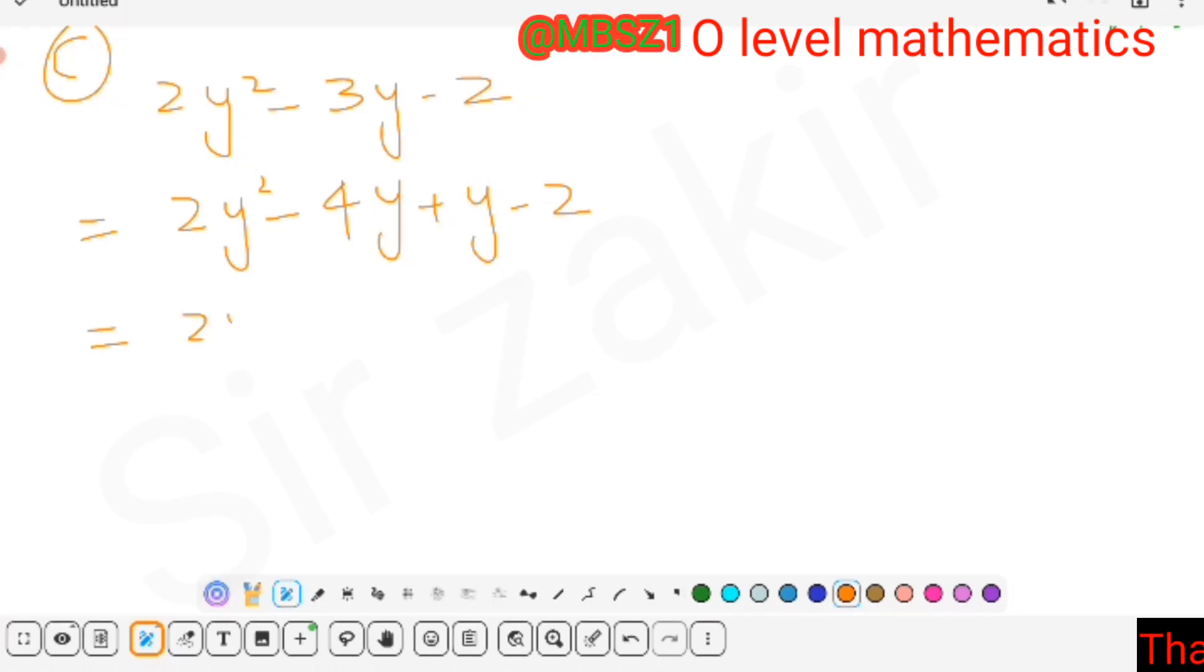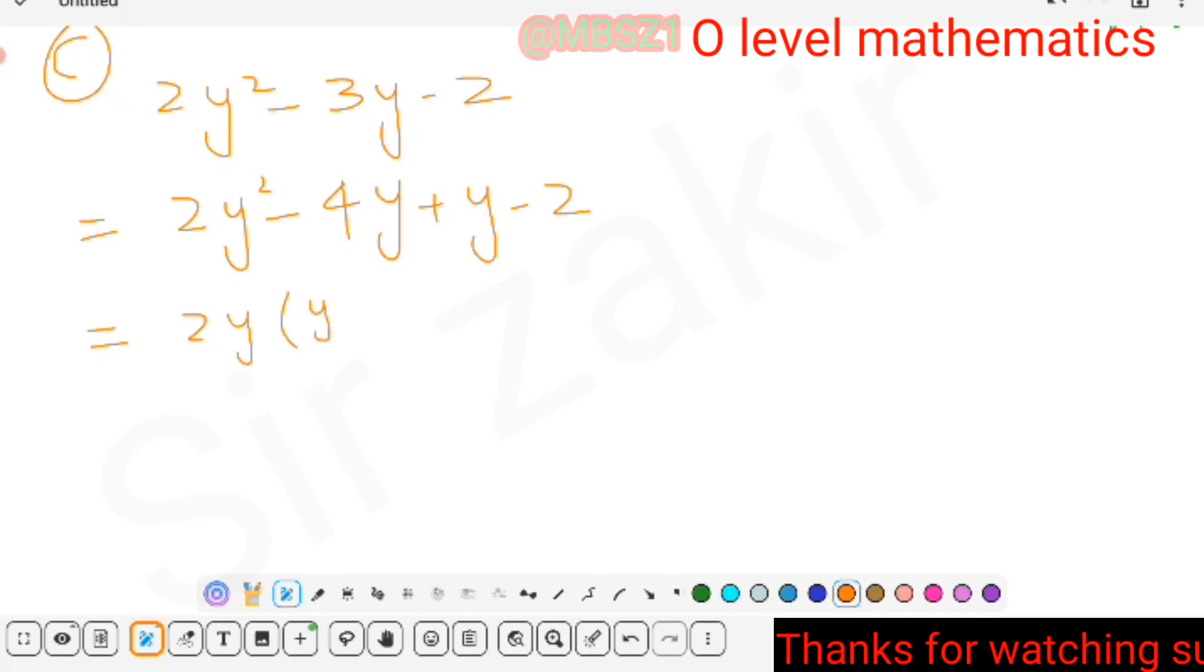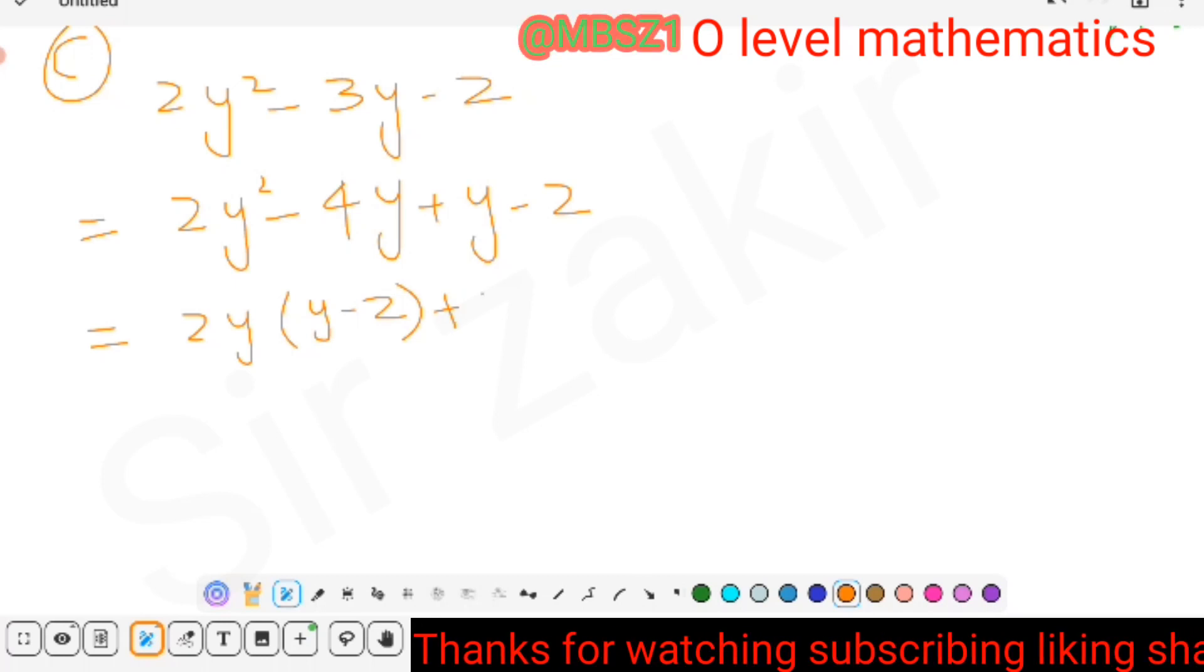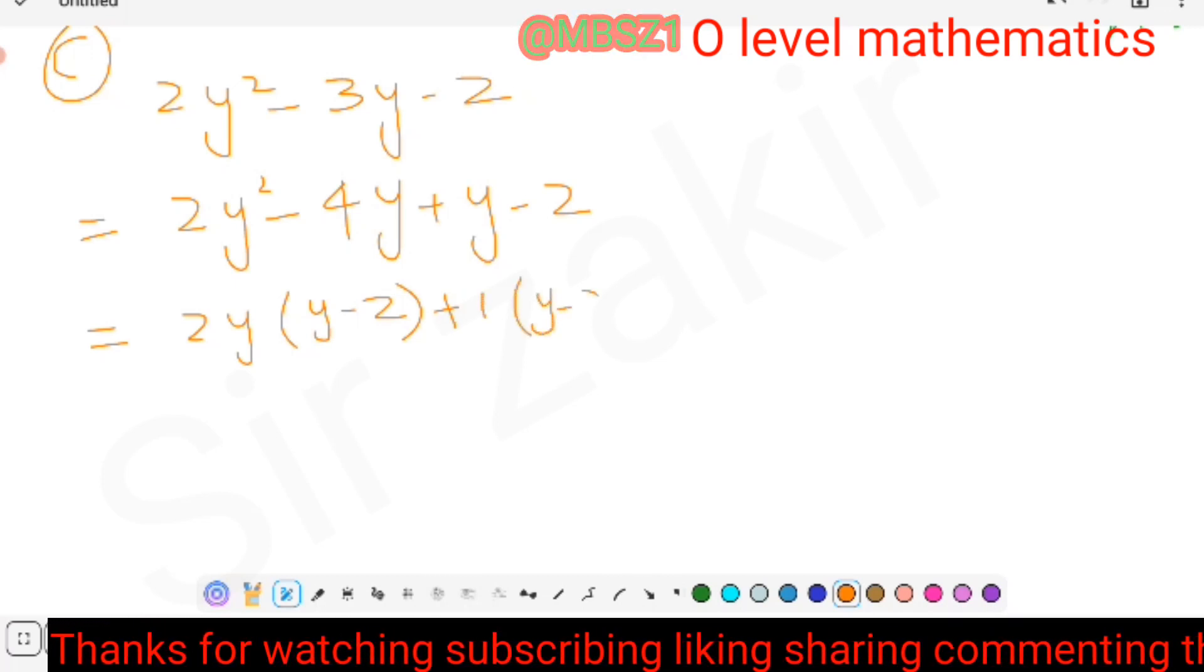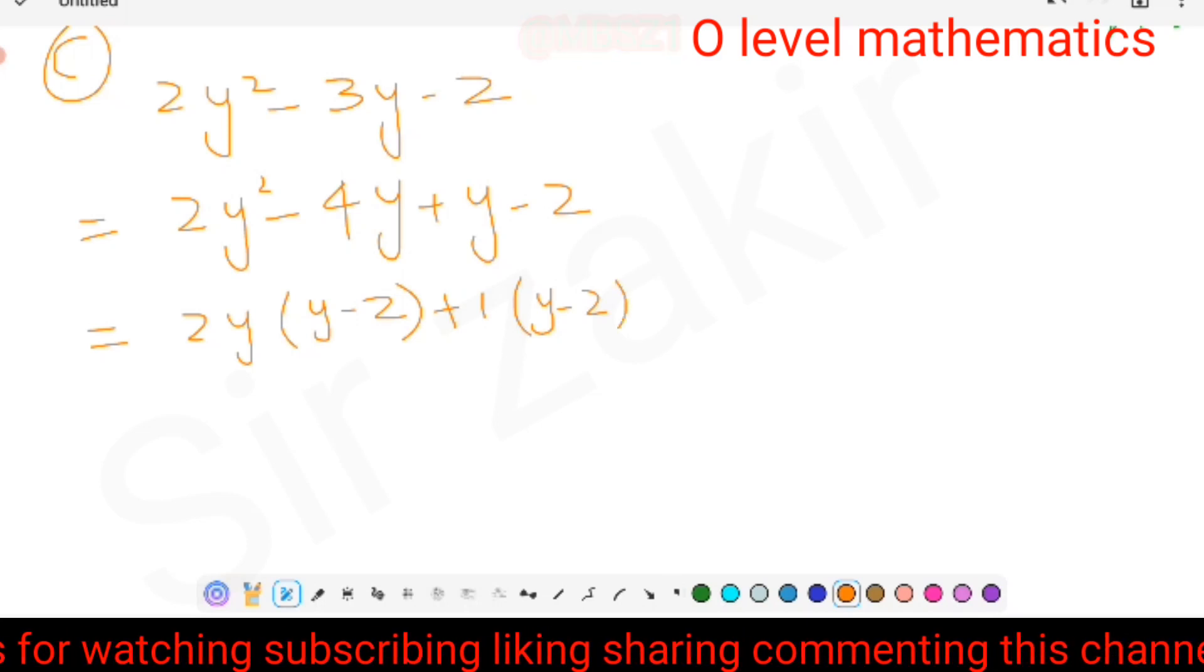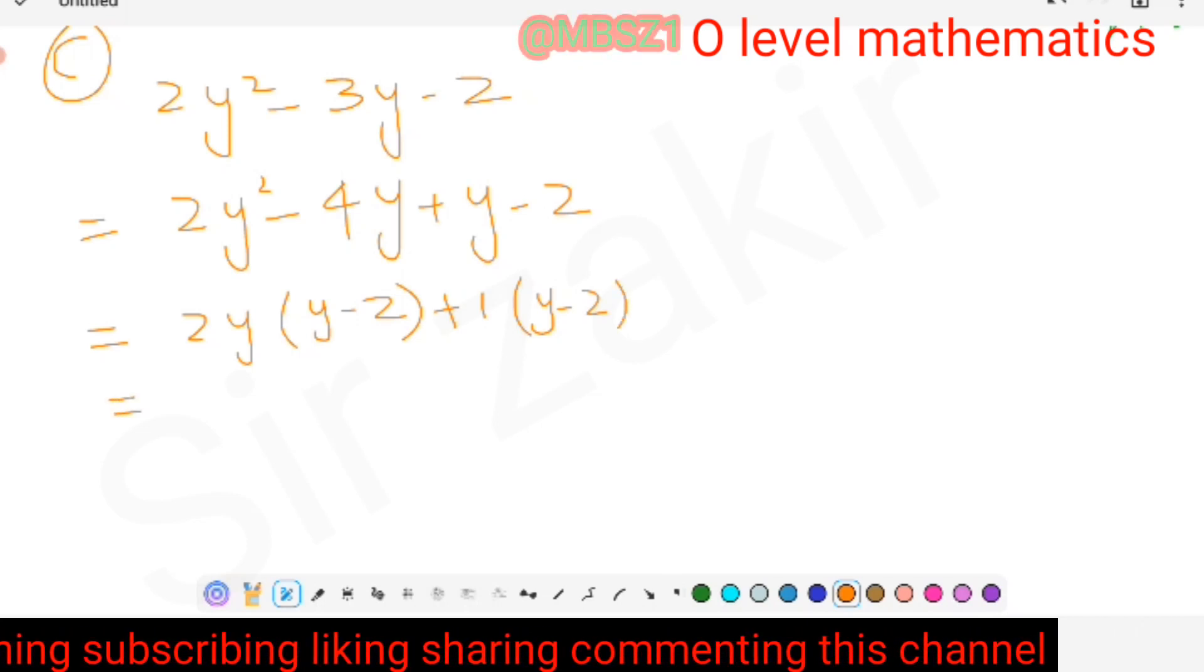When 2y is taken common, what is left: 2y is taken common from first term, y is left. 2y taken common from second term, 2 is left. From third and fourth terms, there is nothing common, so we write 1 common in both. 1 will be written outside, what's inside bracket will be y - 2.